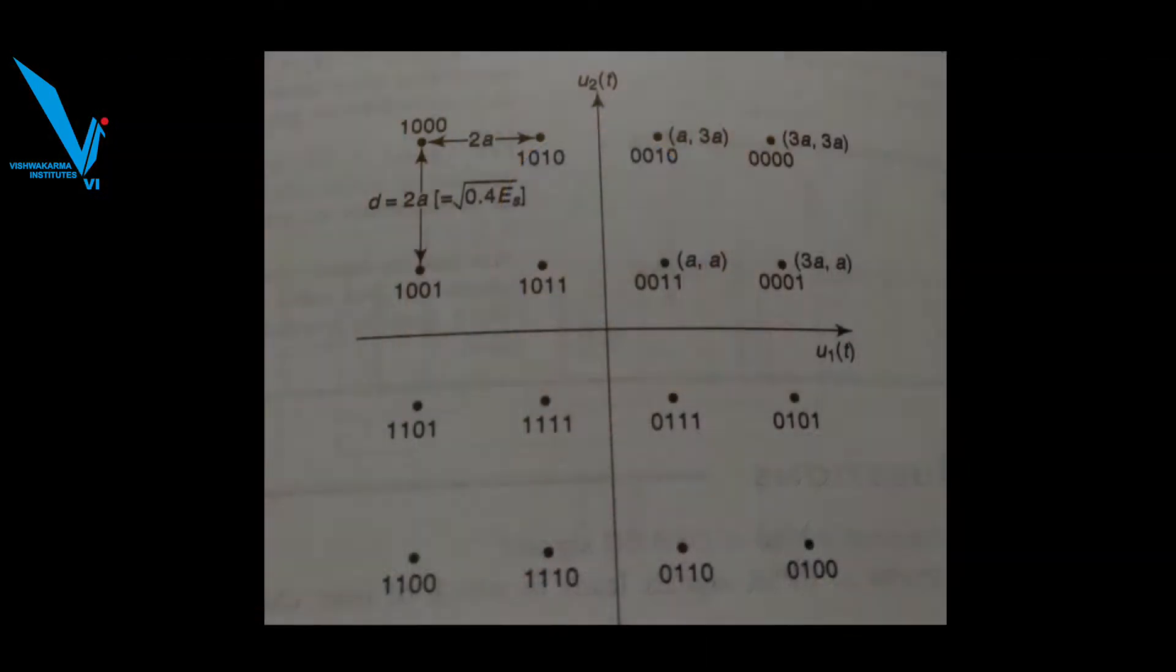In this QASK system, we are considering that a symbol is transmitted, a symbol of 4 bits. So one symbol of 4 bits. Likewise, we have 16 symbols, and for 16 symbols we have different phase and different amplitude. So as an example, since we have taken 16 symbols, we call it as 16-QAM.